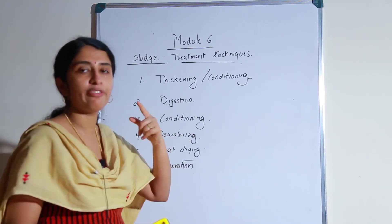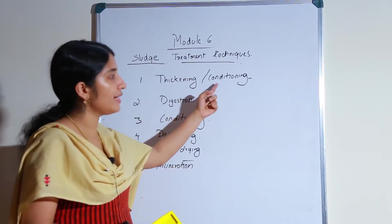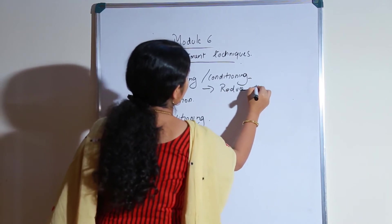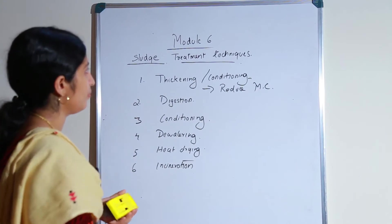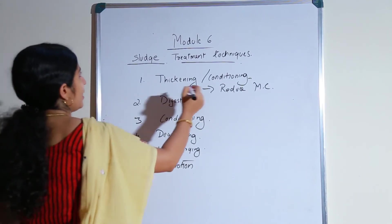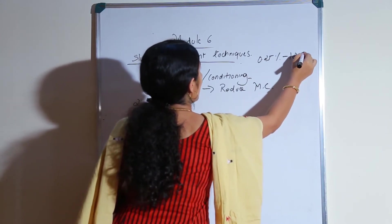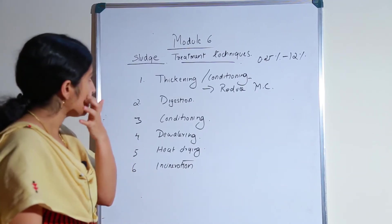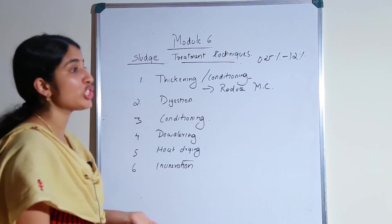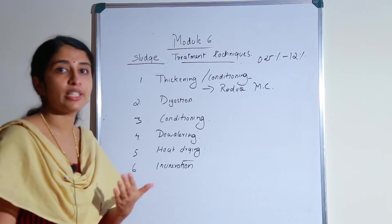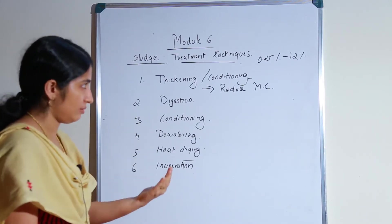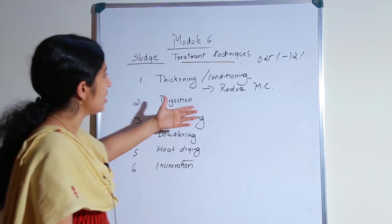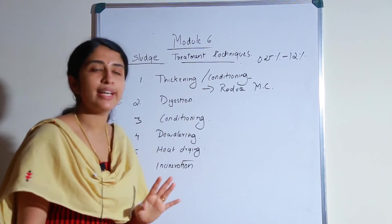The first stage of treatment is sludge thickening or conditioning, which means reducing the moisture content of the sludge. A sludge contains only 0.25% to 12% of solids — the remaining percentage is water. So sludge has a very high moisture content, which needs to be reduced before further processing or disposal. That is called sludge thickening or sludge conditioning.